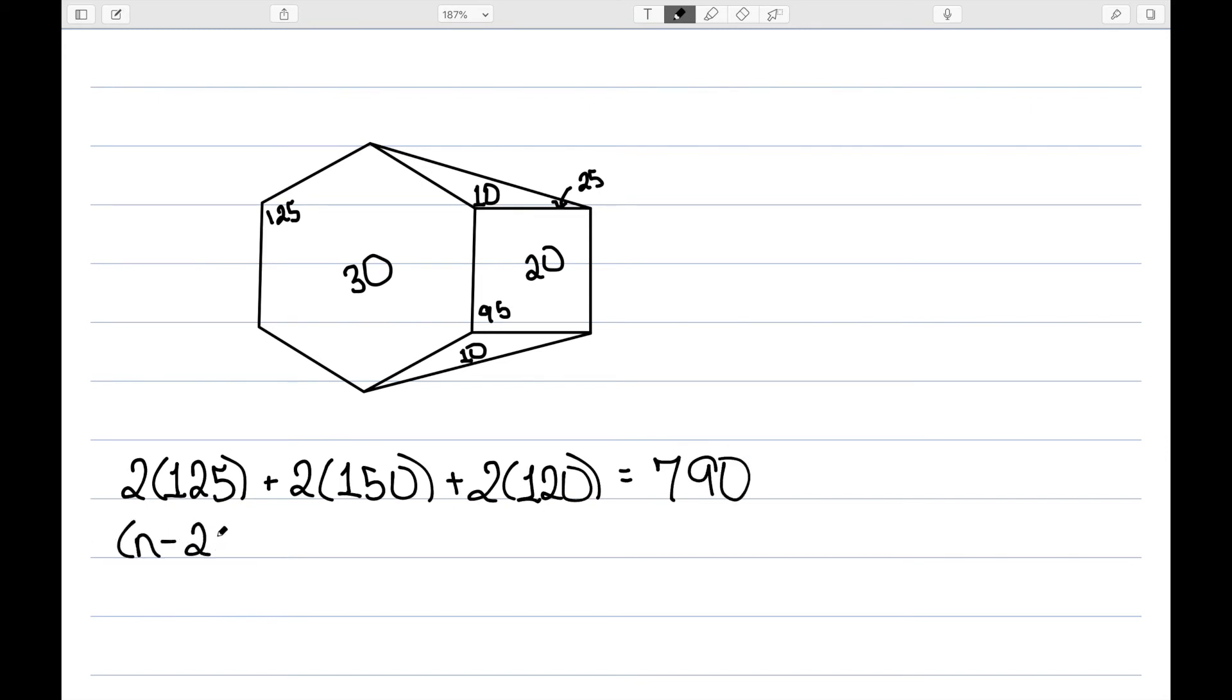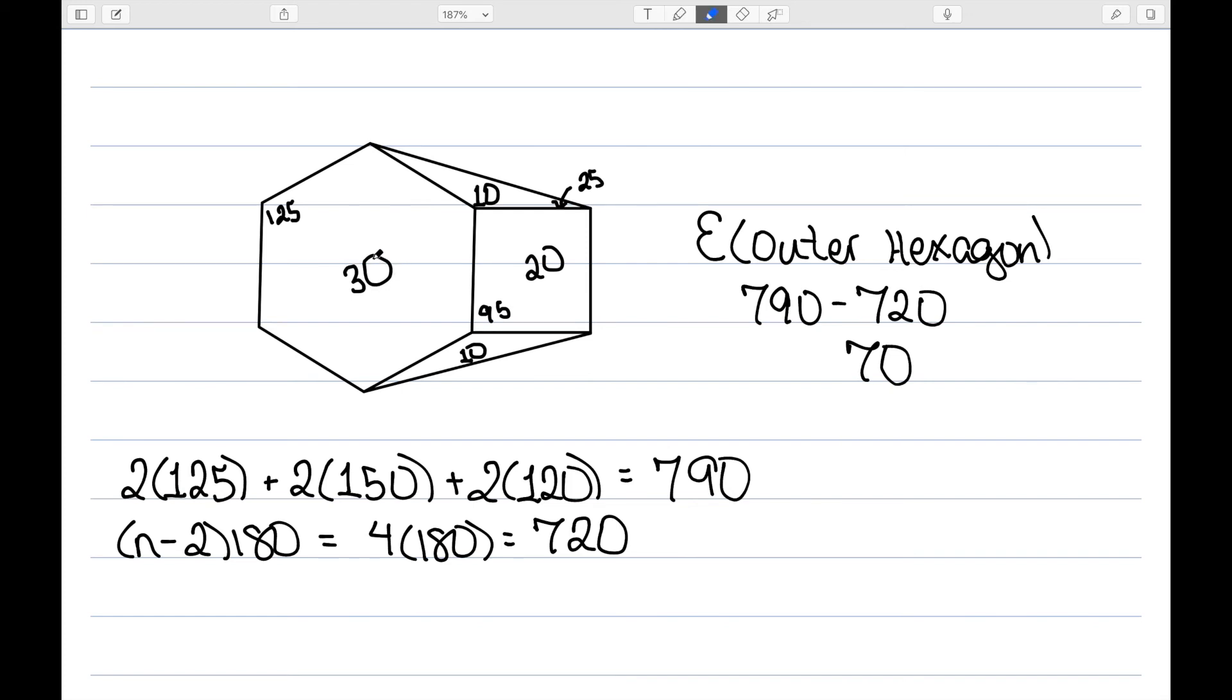On the other hand, n minus 2 times 180. This big outside shape is a hexagon. So we would have 4 times 180. Which is 720. So the excess of the outer hexagon is 790 minus 720 or 70. And we can also see that if we would have added each one of these excesses, 30 plus 20 would be 50, plus 10 is 60, plus 10 is 70. So this is a demonstration of my next theorem.